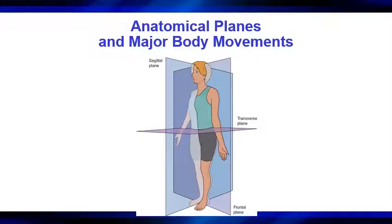Looking at the frontal plane, which cuts the body into front and back: shoulder abduction — moving your arm out to the side, away from your midline and going up over your head — shoulder adduction, bringing your arm back in that straight line to your body, hip abduction, hip adduction. Those are movements that occur through the frontal plane.